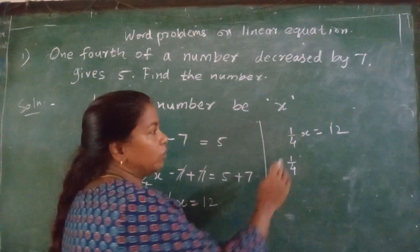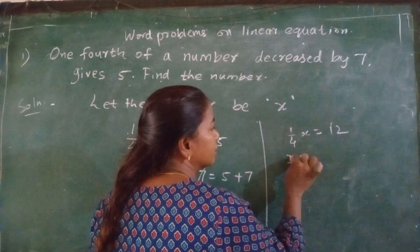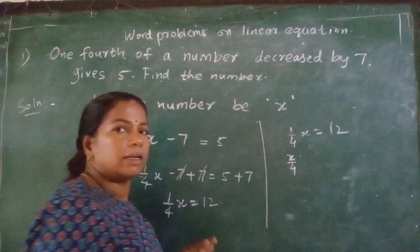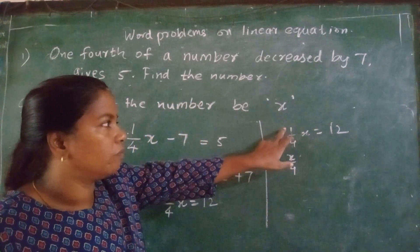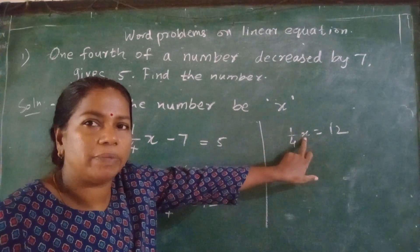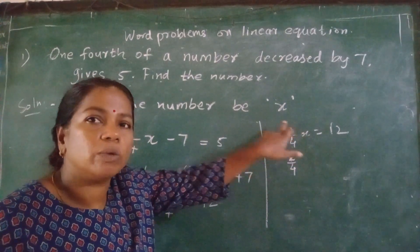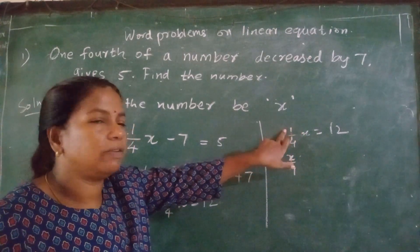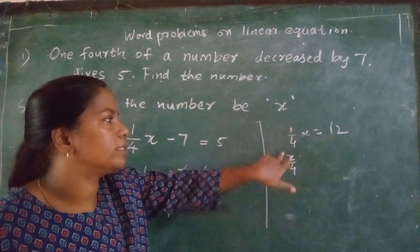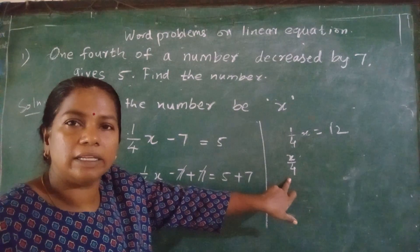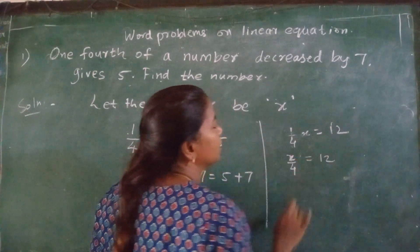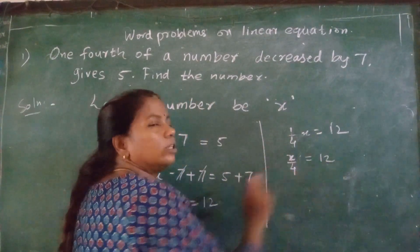One-fourth of X means what? 1 into X, X. And this 4 will be down in the denominator place. When you have to multiply, you have to multiply the variables or number with the numerator, not with the denominator. So X I multiplied with the numerator. That is 1 into X is X. And 4 it is in denominator place. It will be as it is. I will write like this. It will be easy for me. X upon 4 is equal to 12.